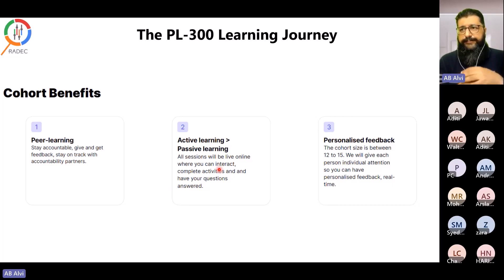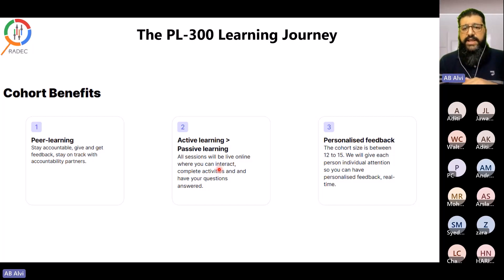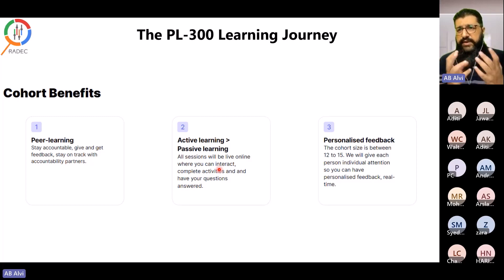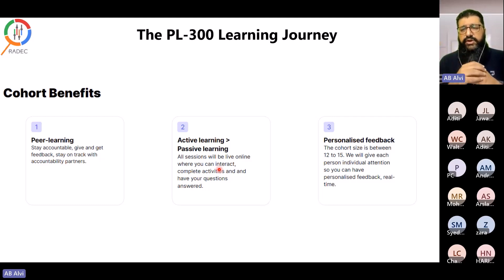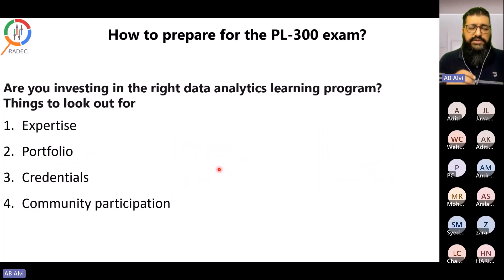Active learning is much more effective — the speed of learning and time required to prepare for the exam is much lower than in a self-learning environment because you are in a live, interactive setting. The cohort size for the courses offered is between 12 and 15 people — 15 is the upper limit. If more people register, they are asked to wait for the next cohort. This small size allows the instructor to give individual attention and personalized feedback in real time.